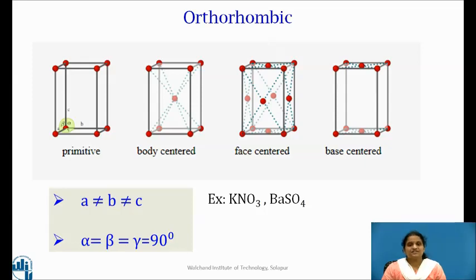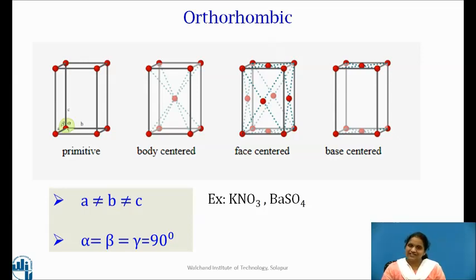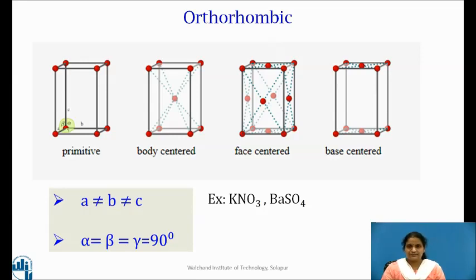In the orthorhombic system, the crystal axes are perpendicular to one another but the lengths of the edges along the three axes are all different. The lattice parameters are A ≠ B ≠ C, and alpha = beta = gamma = 90°. Orthorhombic lattice has four possible arrangements: simple, with lattice points at all eight corners; and base-centered, which has lattice points at all eight corners and two lattice points, one each at the base and top face of the body.